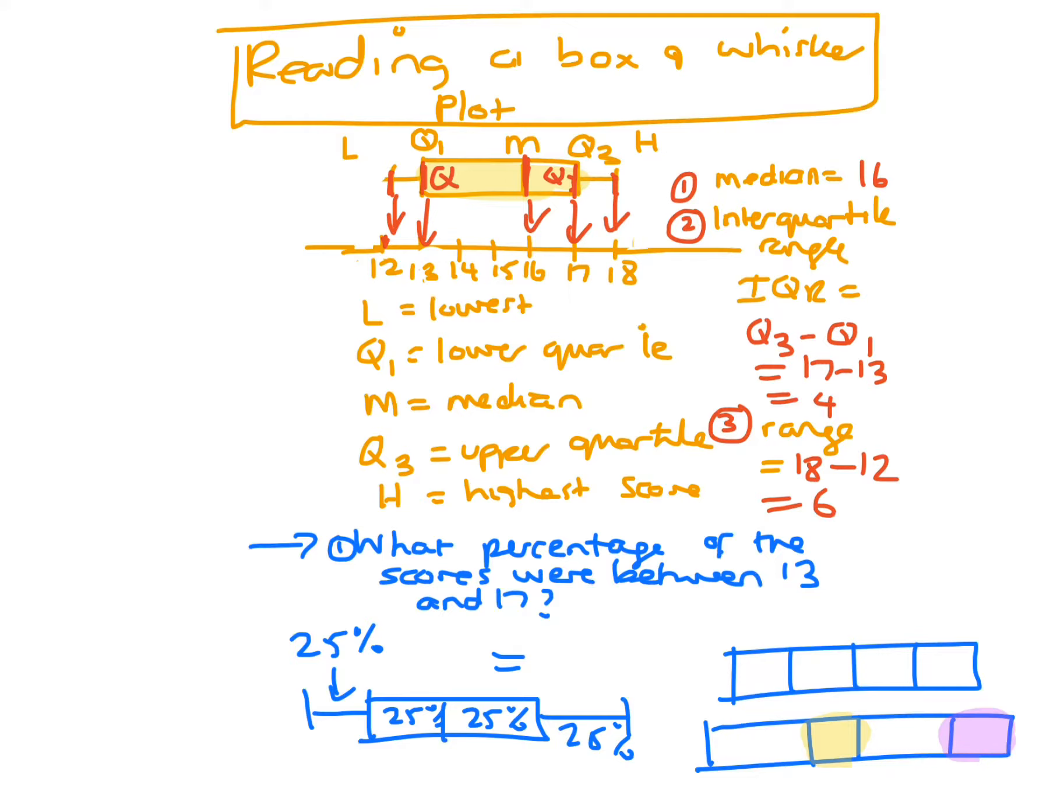So that's a bigger spread. So when you're looking at what percentage of the scores lie between 13 and 17, if you go back up here, 13 and 17 is just your box. So that would be 50%.